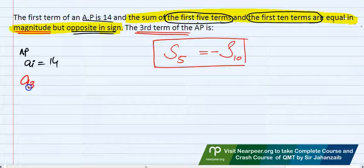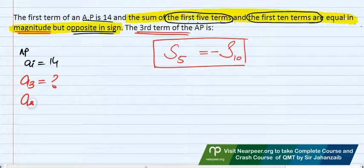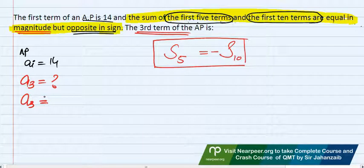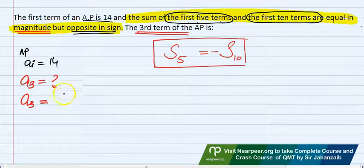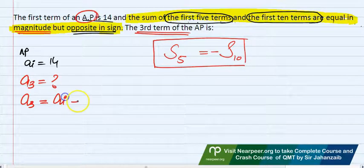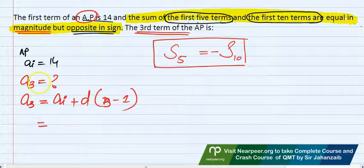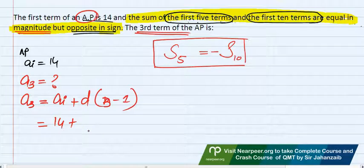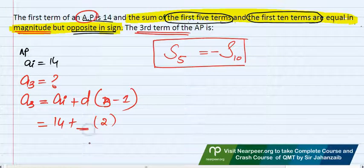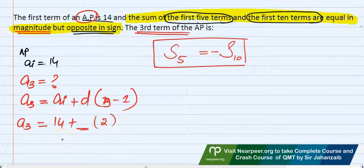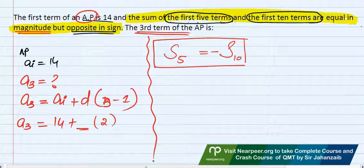To find the third term, you always look at what you need. Third term formula is first term plus common difference into n minus 1. In this case n is 3, so third term is 14 plus 2d. Common difference d is not known. I need to find d. The information given is sum of first 5 terms equals minus sum of first 10 terms.